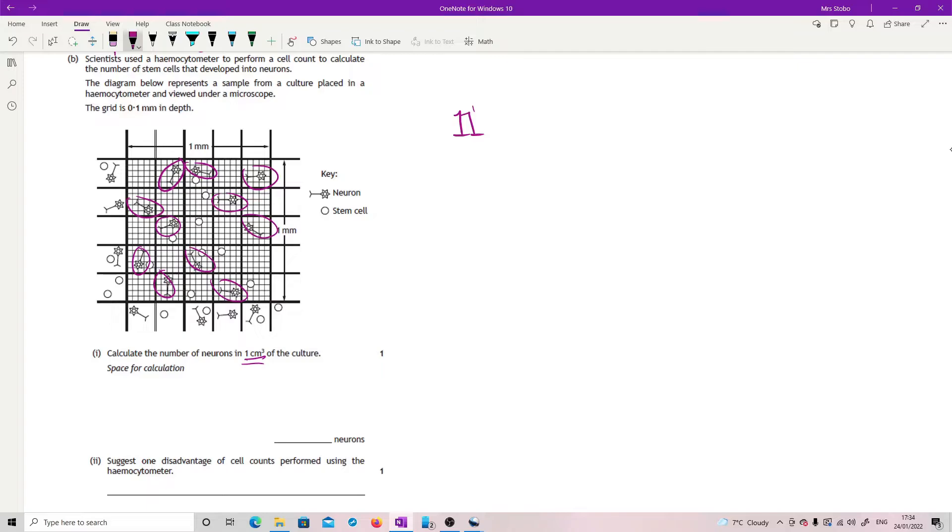Now this is 1 millimeter by 1 millimeter. I'm just going to multiply that by 100 to get that into how much would have been a centimeter by a centimeter. So that would give me this many. But this is only in 0.1 millimeter depth and I need to get to one centimeter depth. You can do it lots of different ways, but if you times it by 10, that would give you one millimeter.